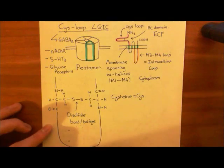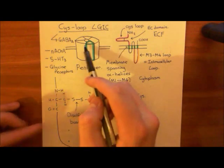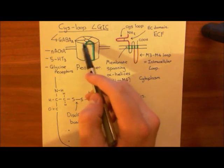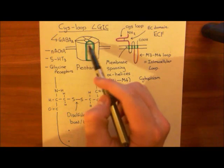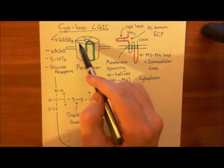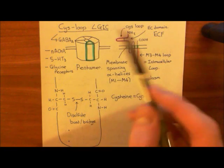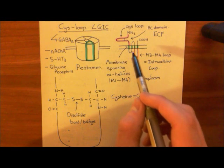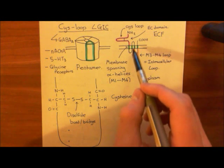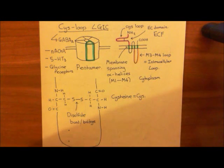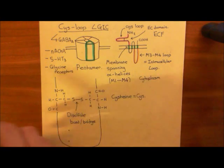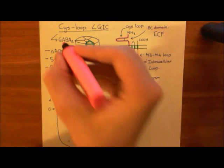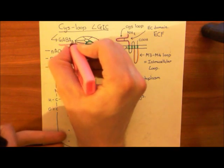What they have in common is that they're all pentamers — all made up of five separate subunits — and all subunits share the same membrane-spanning topology, the same basic structures. But we're concentrating on the GABA-A receptor today.